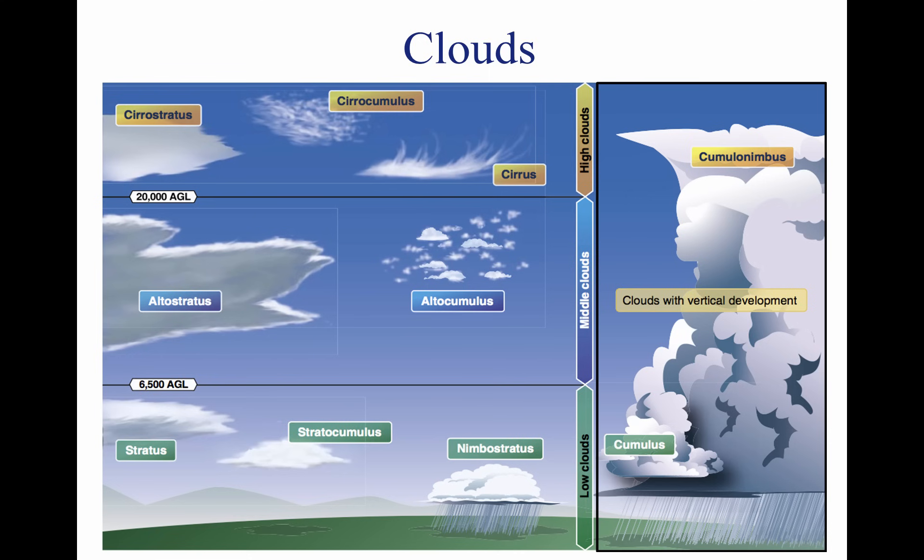Clouds with extensive vertical development are cumulus clouds that build vertically into towering cumulus or cumulonimbus clouds. The bases of these clouds form in the low to middle cloud-based region, but can extend into high-altitude cloud levels. Towering cumulus clouds indicate areas of instability in the atmosphere, and the air around and inside them is turbulent. These types of clouds often develop into cumulonimbus clouds or thunderstorms.